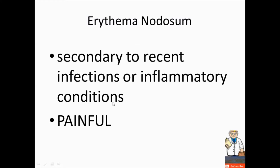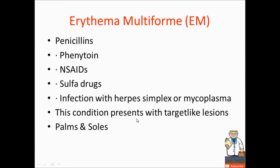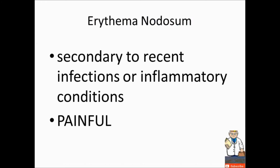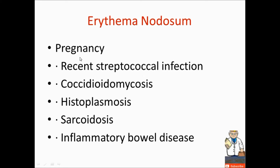Erythema nodosum is secondary to recent infections or inflammatory conditions. It is painful, located on the shin. Associated conditions include pregnancy, recent streptococcal infection, coccidioidomycosis, histoplasmosis, sarcoidosis, and inflammatory bowel disease.